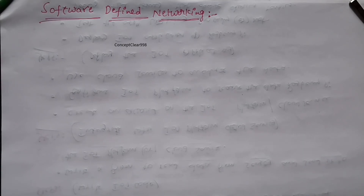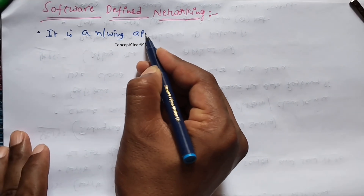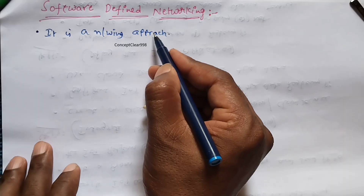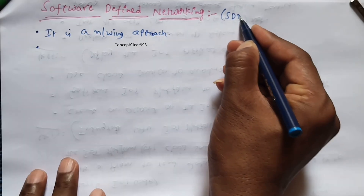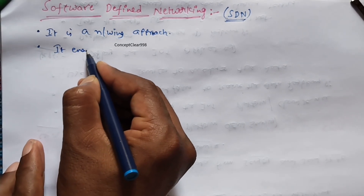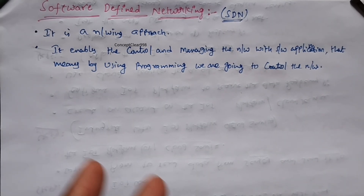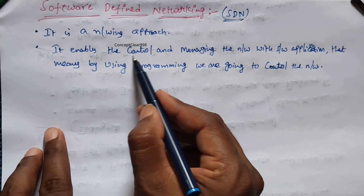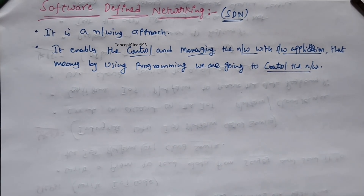Software Defined Networking, SDN, is a networking approach. In shortcut it is called SDN. It enables the control and managing of the network with software applications. Using programming we are going to control the network, and whenever implementing programs in IoT we need SDN.